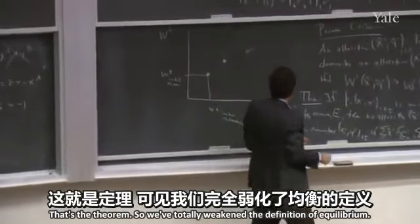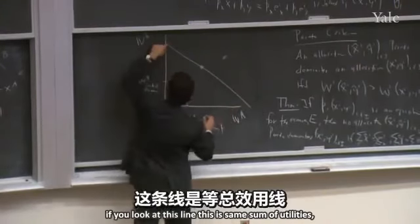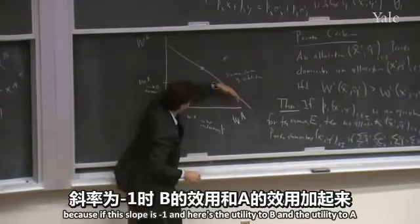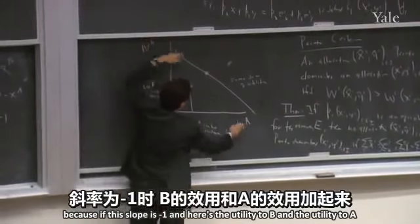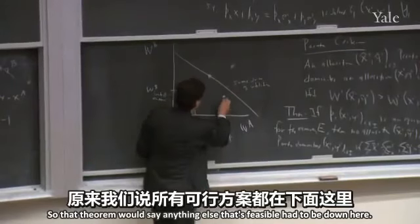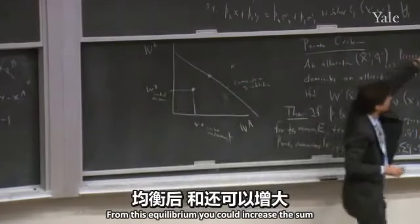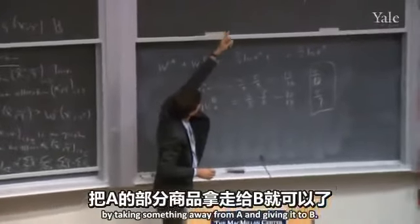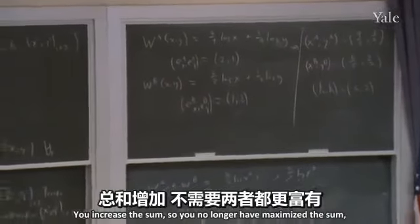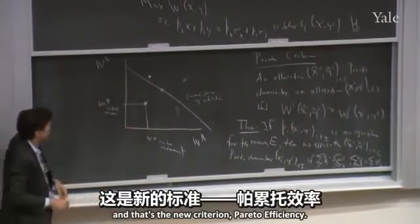It might be that from this competitive allocation, if you look at this line — representing the same sum of utilities — anything else feasible must be below it. But the Pareto theorem doesn't say that. Maybe you can increase the sum by taking something from A and giving it to B. You increase the sum, but to make B better off you had to make A worse off. That's the new criterion — Pareto efficiency. And now we're going to prove it so you can see the whole logic of the free market.